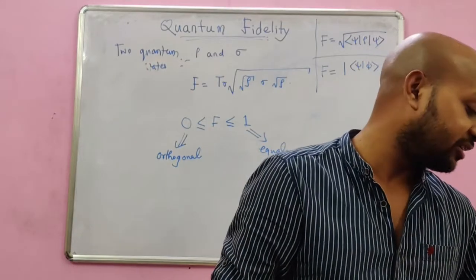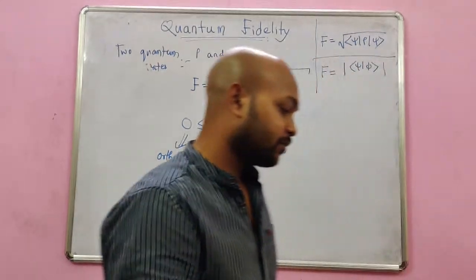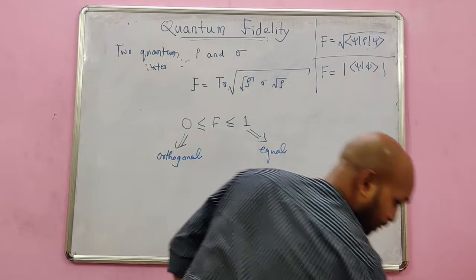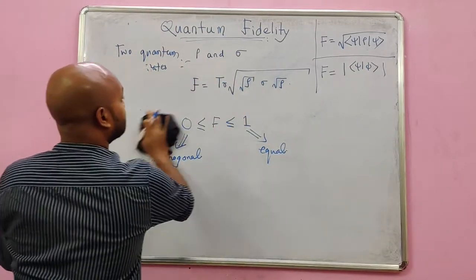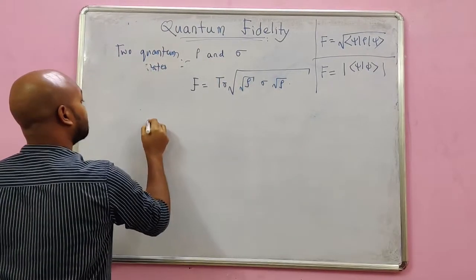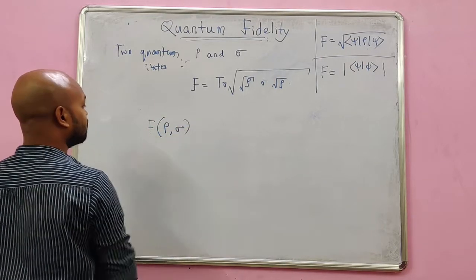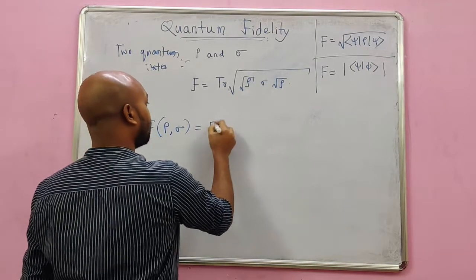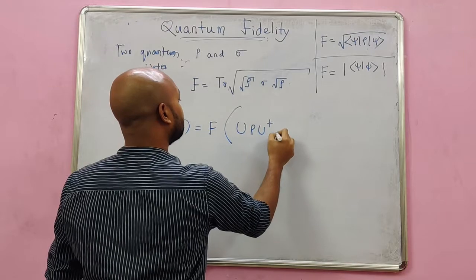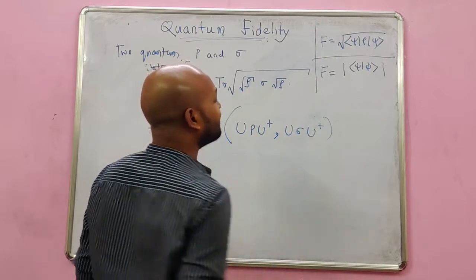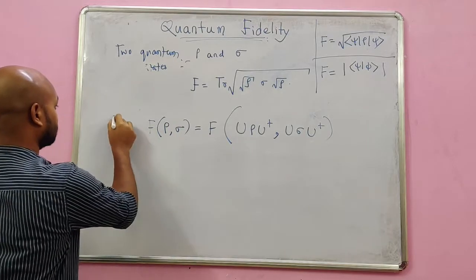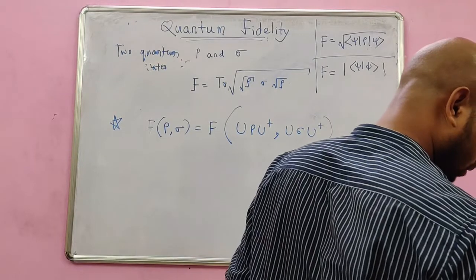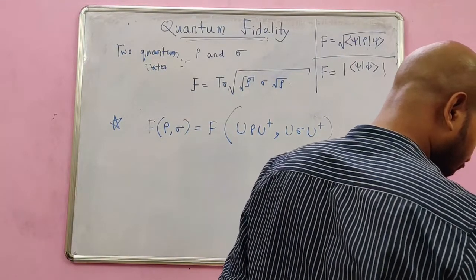Let me make certain more remarks on fidelity. Fidelity is invariant under unitary transformation - that means the fidelity of ρ and σ would not change when ρ and σ evolved by unitary operation. Fidelity is invariant under unitary operation. Another important remark is here...